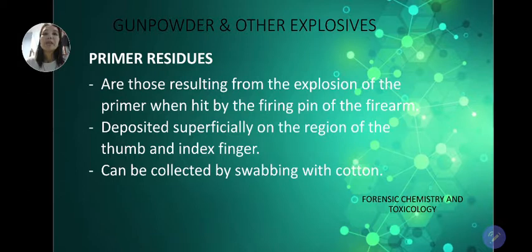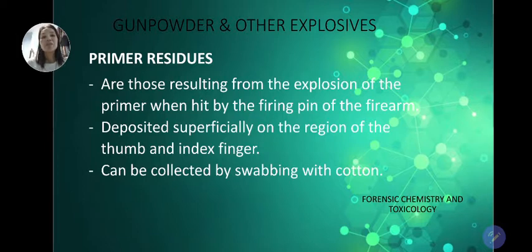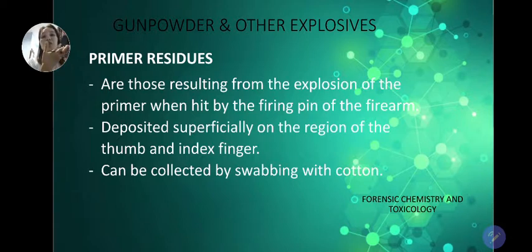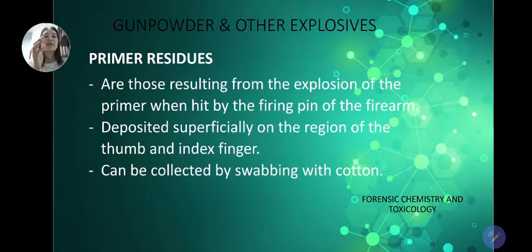Primer residues result from the explosion of the primer when hit by the firing pin of the firearm. They are deposited superficially on the region of the thumb and index finger. Our focus during paraffin examination is that area — the thumb and the middle part between the thumb and index finger — because those are the exposed portions when gripping a firearm.